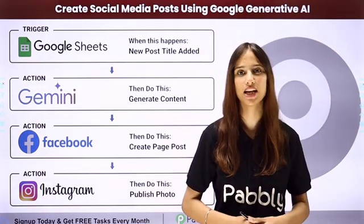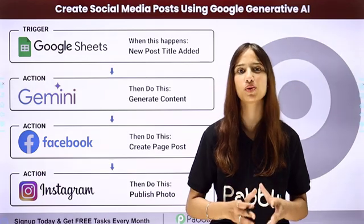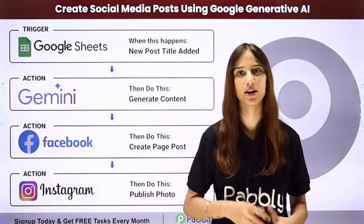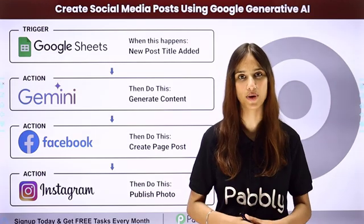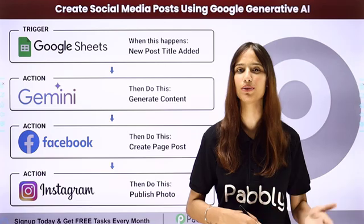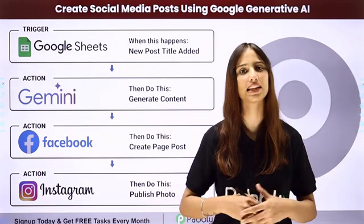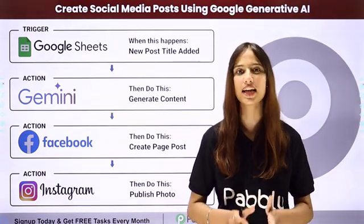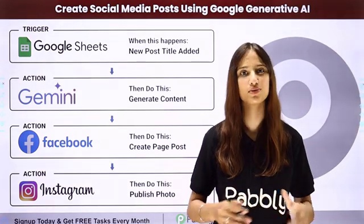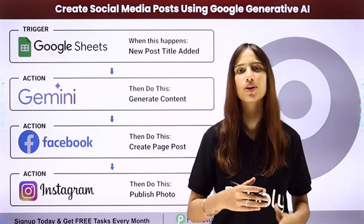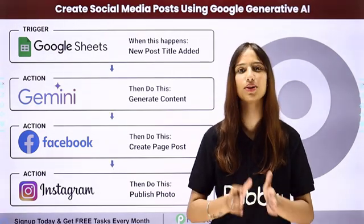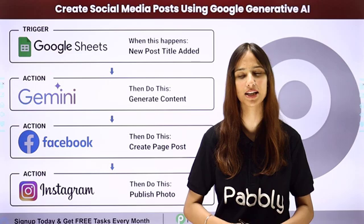In this automation, I'm going to show you how to create posts using Google Generative AI. In a Google Sheet, whenever I add a post title along with an image URL, I'll use Google Gemini to generate captions. Once the caption is generated, the post will be shared on my Facebook page and Instagram account. You can use other social media platforms too.